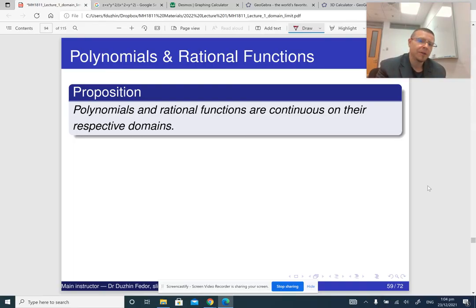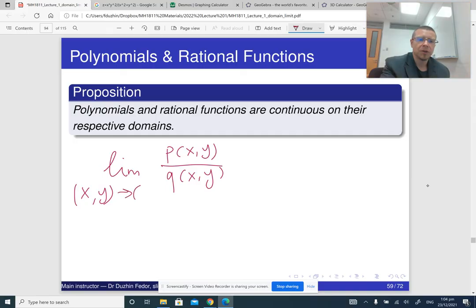Because literally, these limit laws tell us that in order to compute the limit of a rational function, what you need to do is you need to substitute a and b as x and y. So if you have the limit of a rational function, let me write it as p of x and y, where p is some polynomial in x and y, and q is some other polynomial in x and y, as x and y approach (a, b).